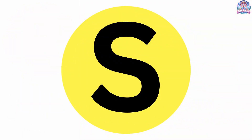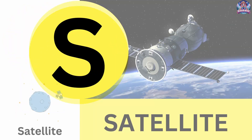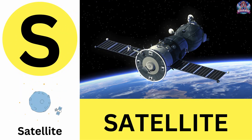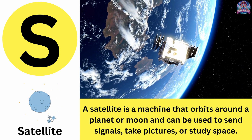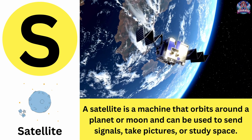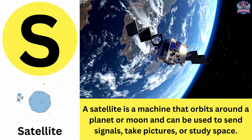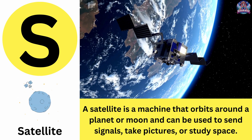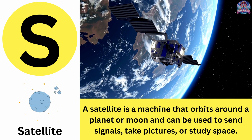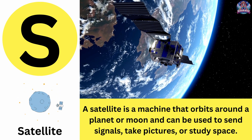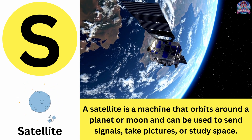S. S is for satellite. A satellite is a machine that orbits around a planet or moon and can be used to send signals, take pictures, or study space. Satellite.